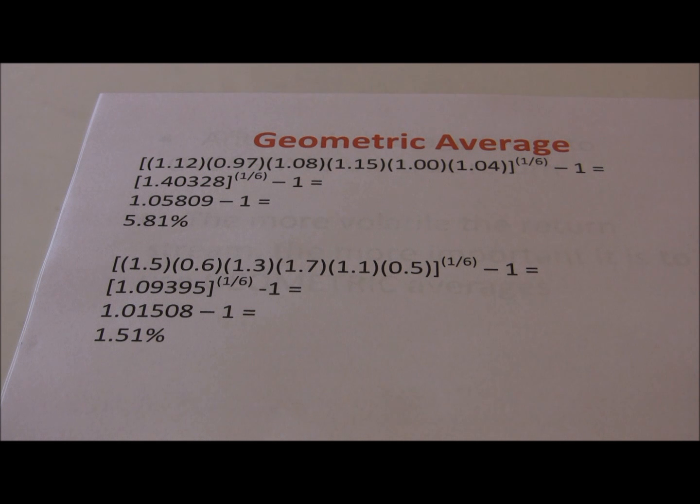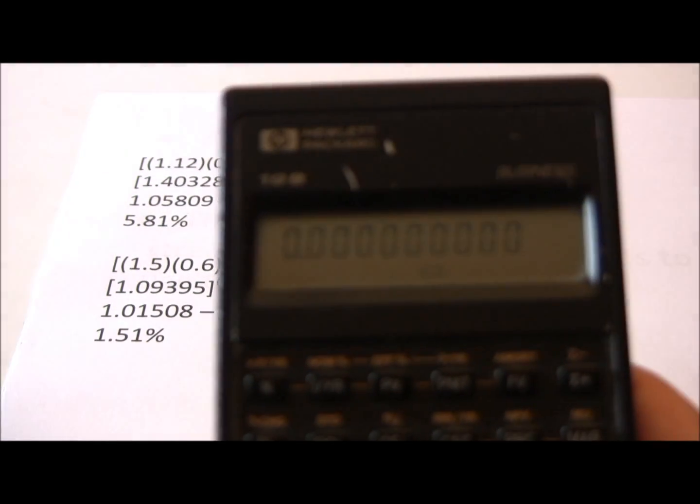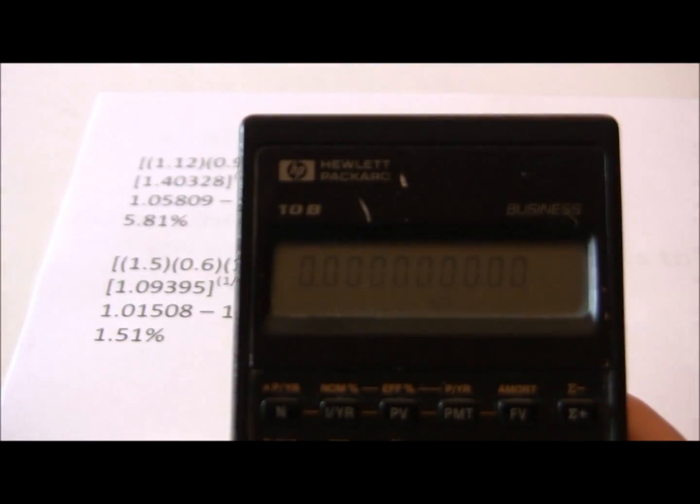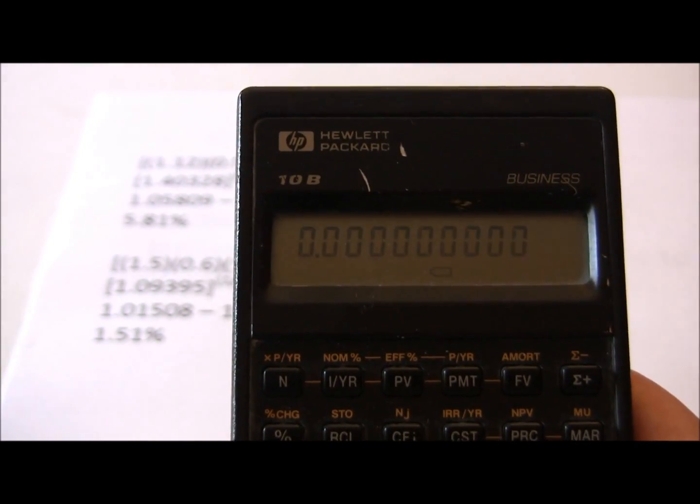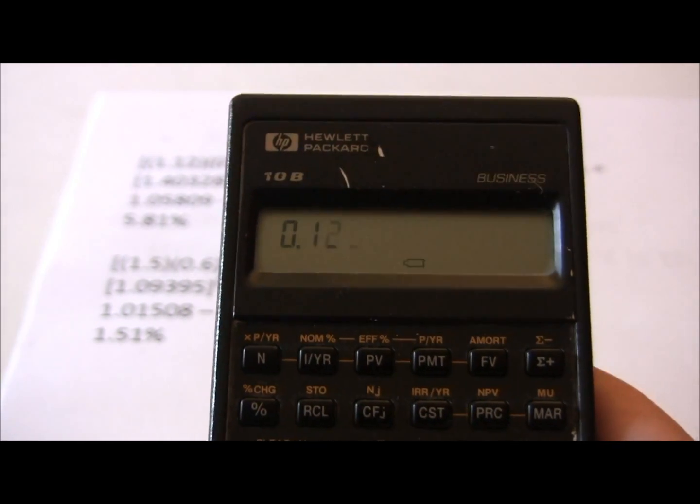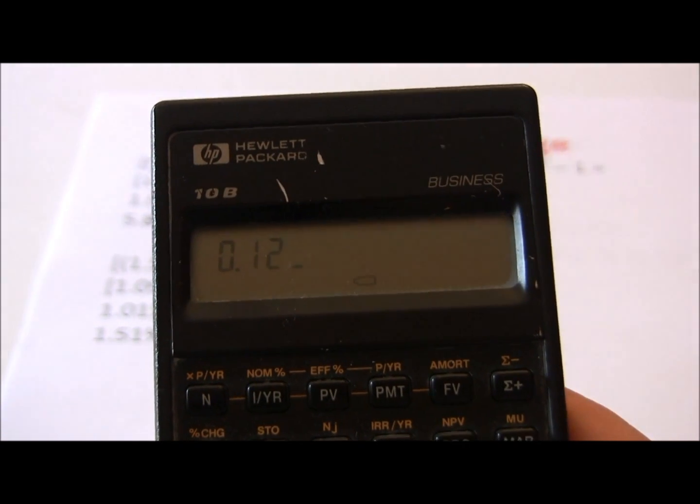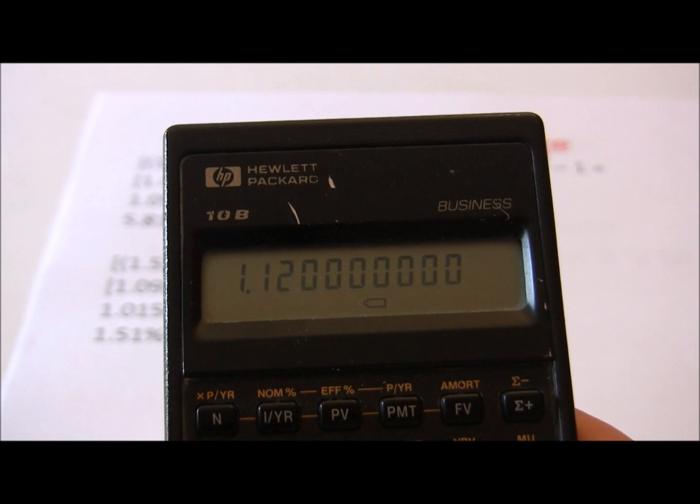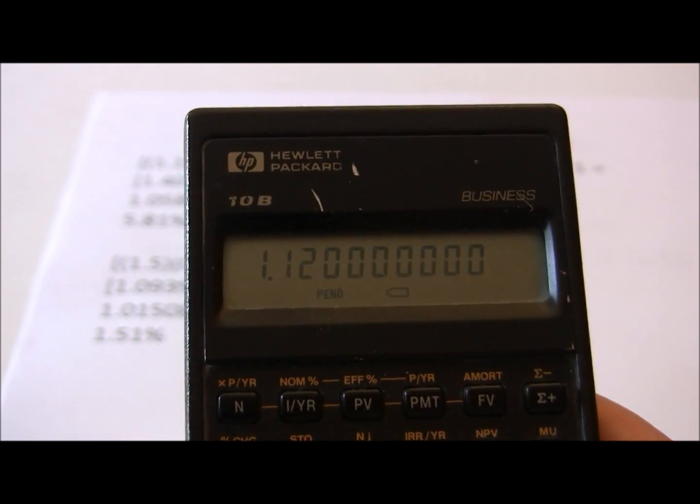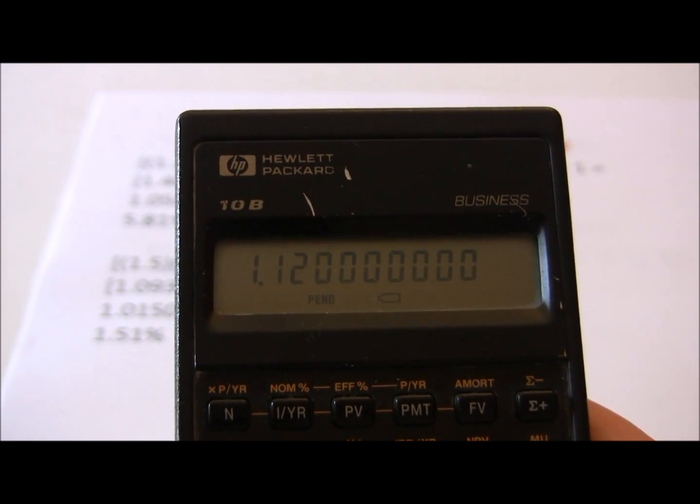This is a little bit trickier. What we want to do with the geometric average is start with each of our individual returns, add one. So in the first year we had a 12% return. We need to make that a decimal here, add one to it, so year one is 1.12.